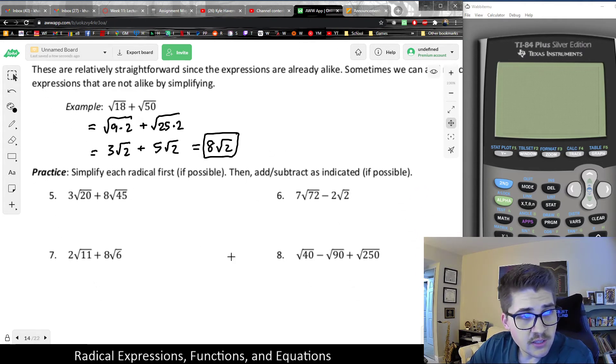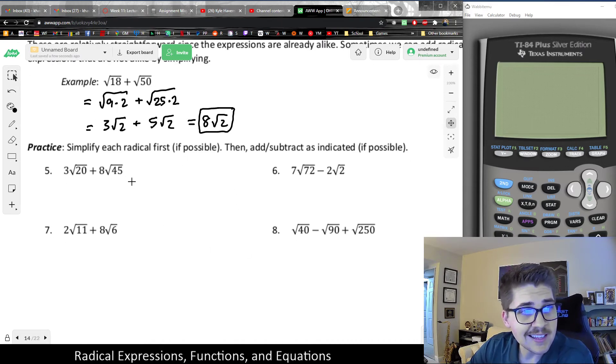So in general, looking at the next few, it says simplify them if possible. Basically, what I would do is first, before you do anything, simplify each of the radicals. If those do simplify, you might be able to add them together. If not, you can't.